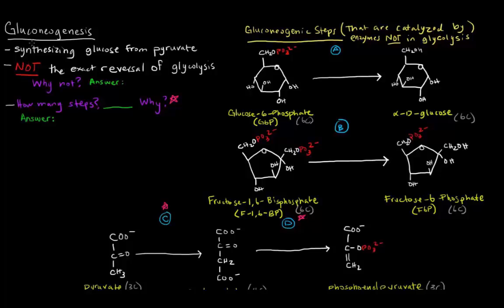In this video I want to talk about gluconeogenesis. Gluconeogenesis is sort of like the reverse pathway of glycolysis. Gluconeogenesis comes from gluco meaning glucose, neo meaning new, and genesis meaning to make or create. So we're synthesizing glucose from pyruvate, which is essentially the reversal of glycolysis, but it's not the exact reversal of glycolysis.